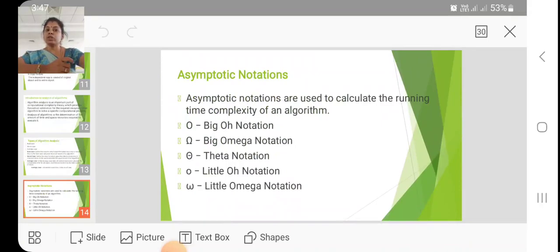Asymptotic notations. The asymptotic notations are used to calculate the running time complexity of an algorithm. Big O notation, big omega notation, theta notation, little o notation, little omega notation.